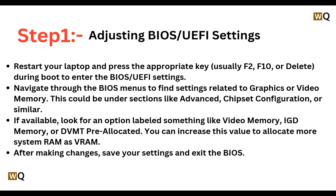This could be under sections like Advanced, Chipset Configuration, or similar. If available, look for an option labeled something like Video Memory, IGD Memory, or DVMT Pre-Allocated. You can increase this value to allocate more system RAM as VRAM.